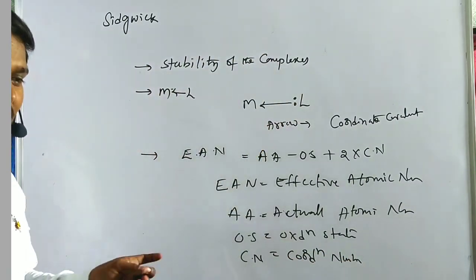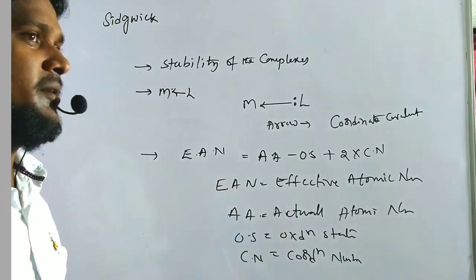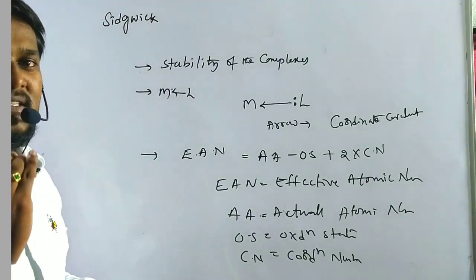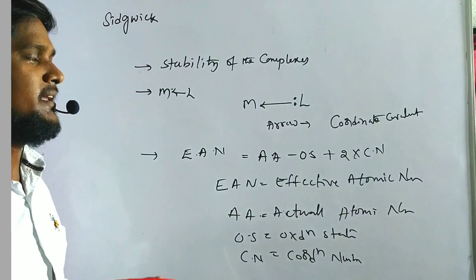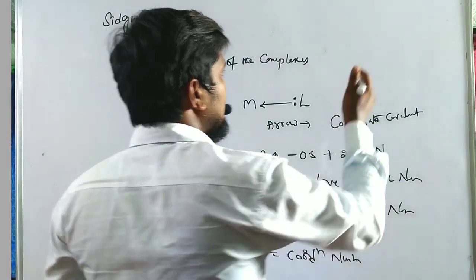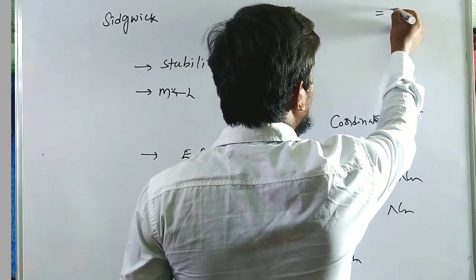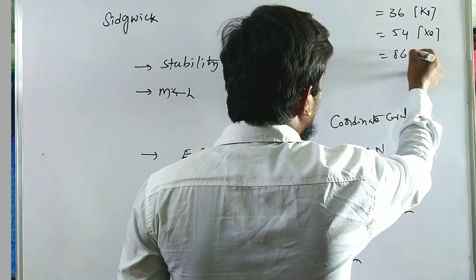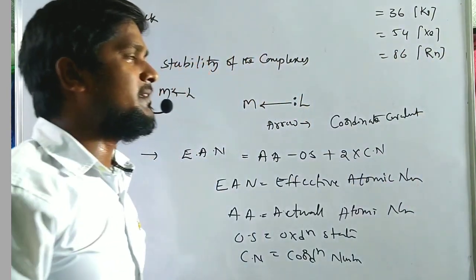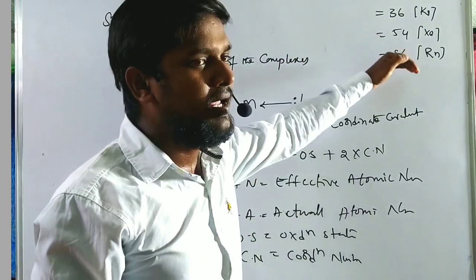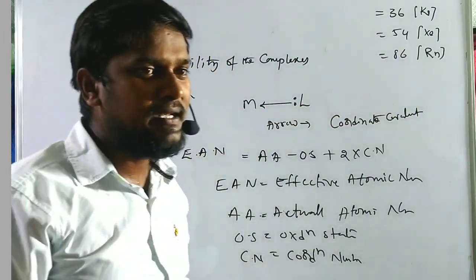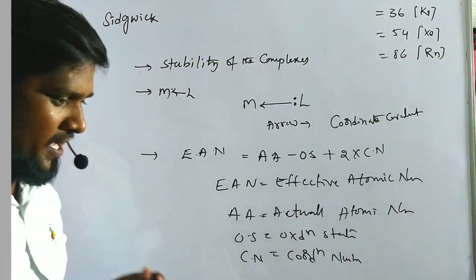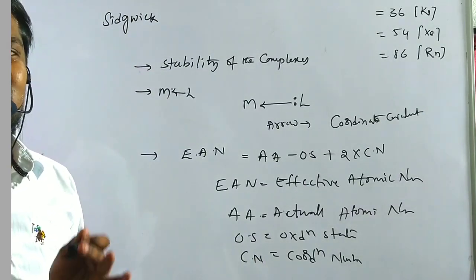With the help of the effective atomic number, Sidgwick gave the stability rule: if the EAN of any metal in a complex equals the next noble gas configuration, then it is said to be a stable complex. For example, 36 corresponds to krypton, 54 to xenon, and 86 to radon. Whenever a complex has an EAN of 36, 54, or 86, it is a stable complex.